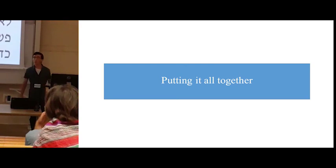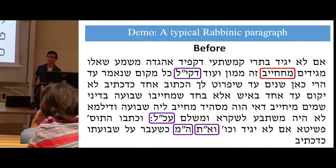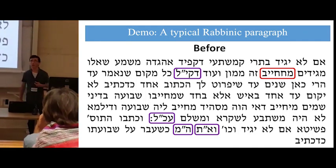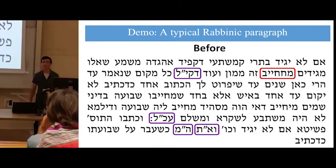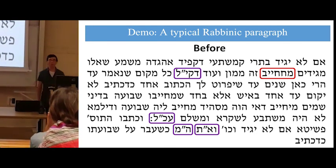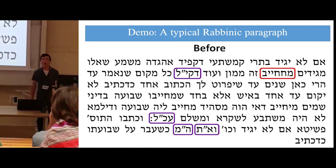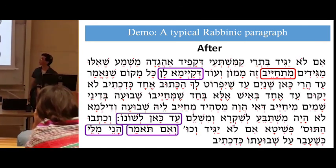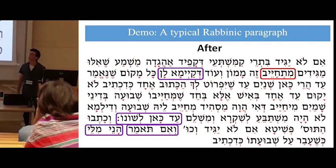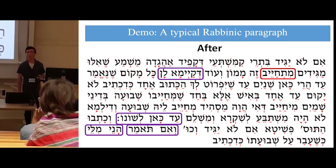Putting all three projects together, we wanted to demo our work on a sample paragraph from the Beit Yosef — the same paragraph shown at the beginning of the presentation. As you can see, there is an error, multiple abbreviations, and the text is not vocalized. After running it through all three of our projects, here you can see the error fixed, abbreviations expanded, and it's auto-vocalized.